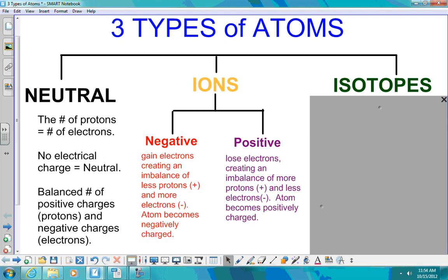That's why we call it a negative ion. So when it gains an electron, it creates an imbalance where there are less protons and more electrons. The atom becomes negatively charged.